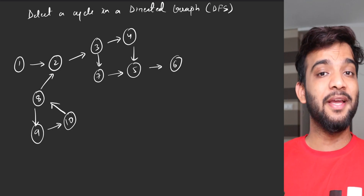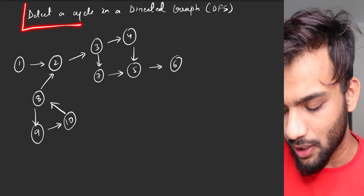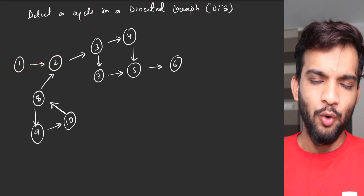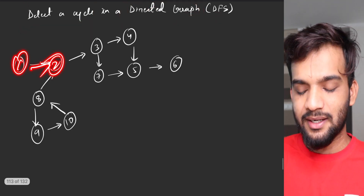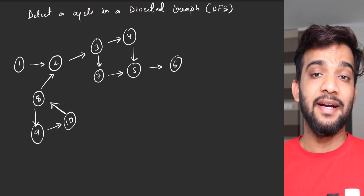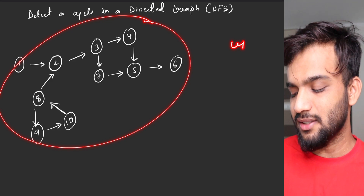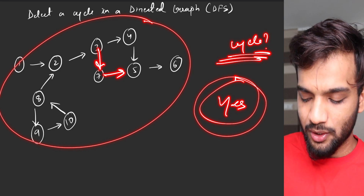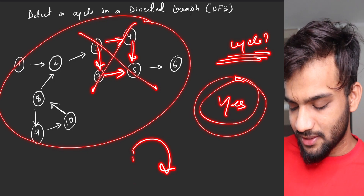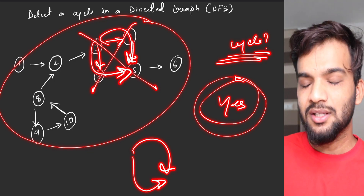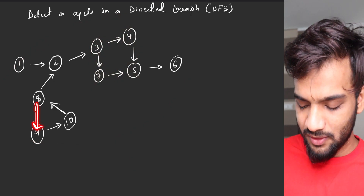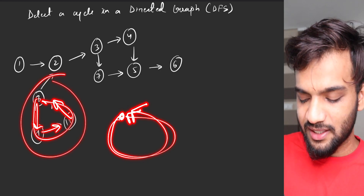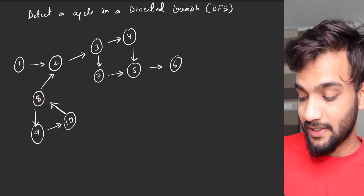Hey everyone, welcome back to the channel. In this video we are going to learn how to detect a cycle in a directed graph using the depth first search algorithm. In a directed graph, nodes are connected by directed edges. Now does this graph have a cycle? You cannot call a partial traversal a cycle — but if you start from a node and reach back to it, that is a cycle. So yes, a cycle does exist.